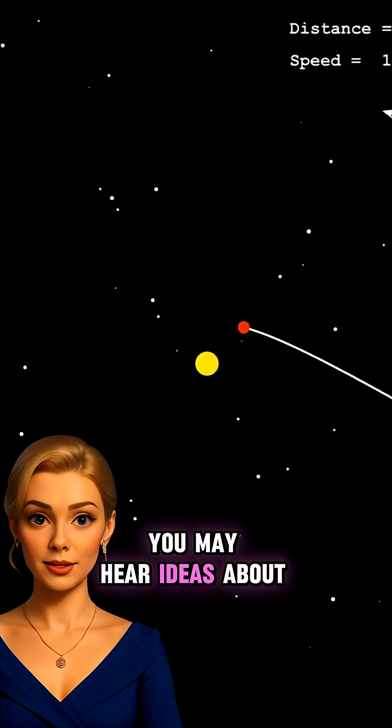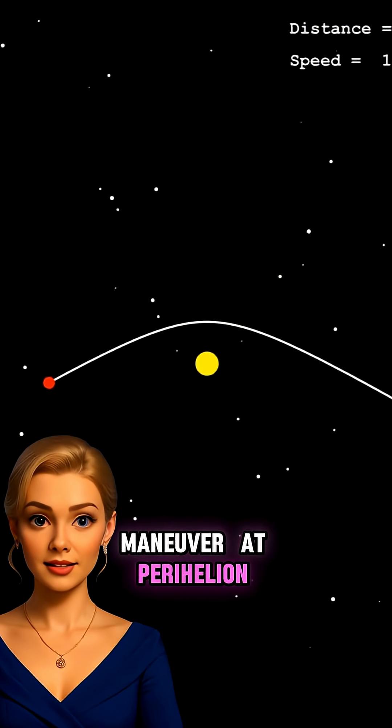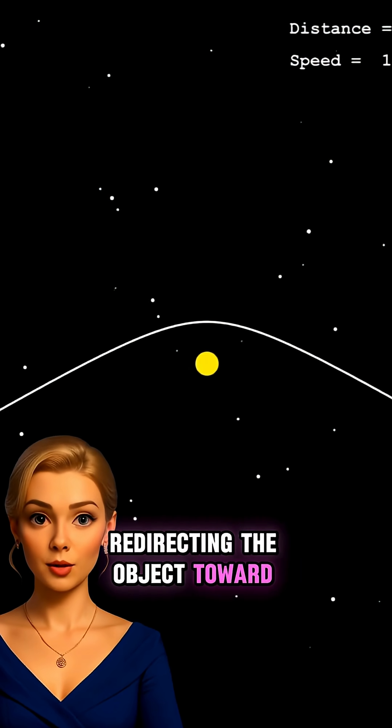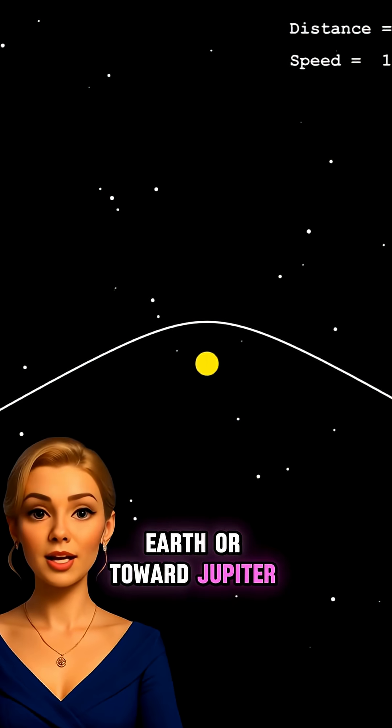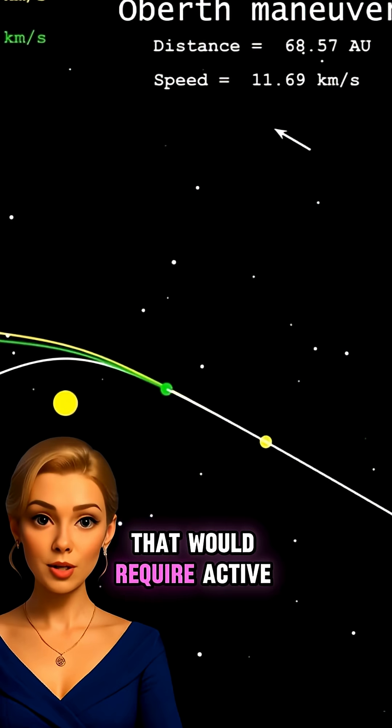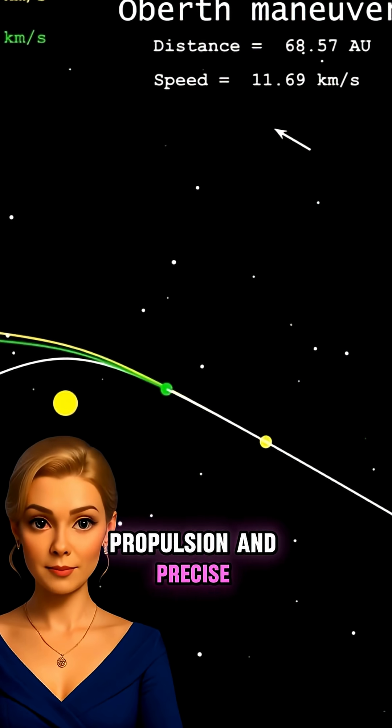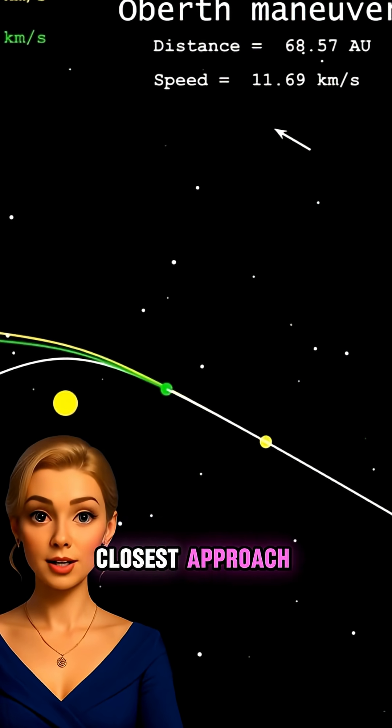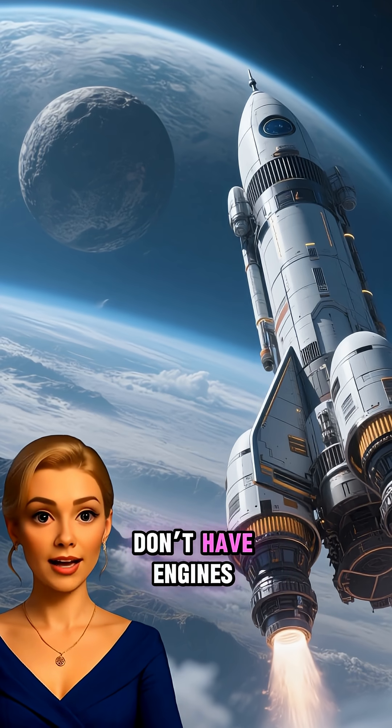You may hear ideas about an Oberth maneuver at perihelion, redirecting the object toward Earth or toward Jupiter. In reality, that would require active propulsion and precise thrusting at the moment of closest approach. Natural objects don't have engines.